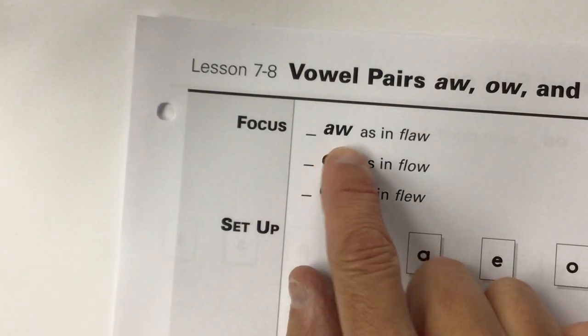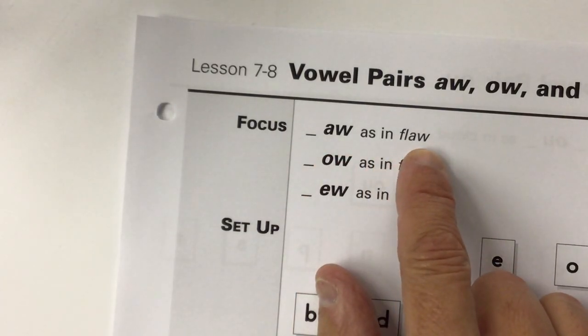So here is the A-W, that's in the word flaw. Notice that the A-W just says ah. Now you say it.